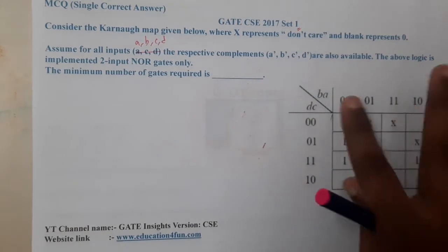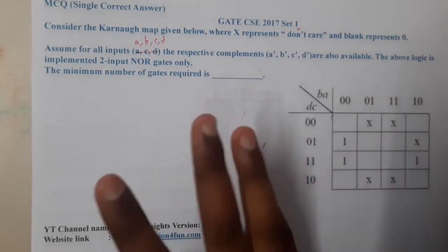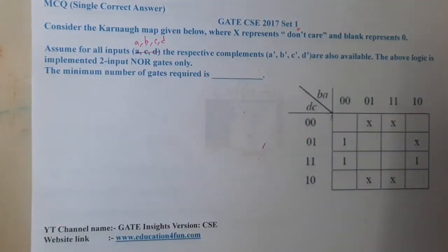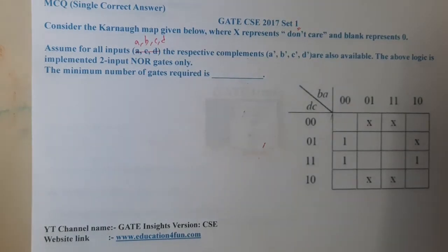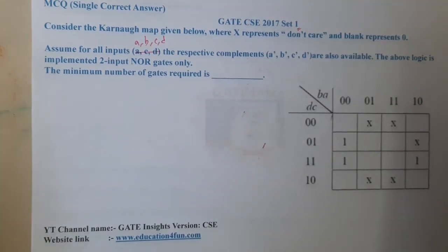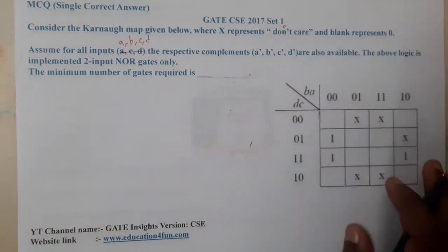Now our goal is to find the equation from this and we need to implement it using NOR gates. The first thing you observe here is